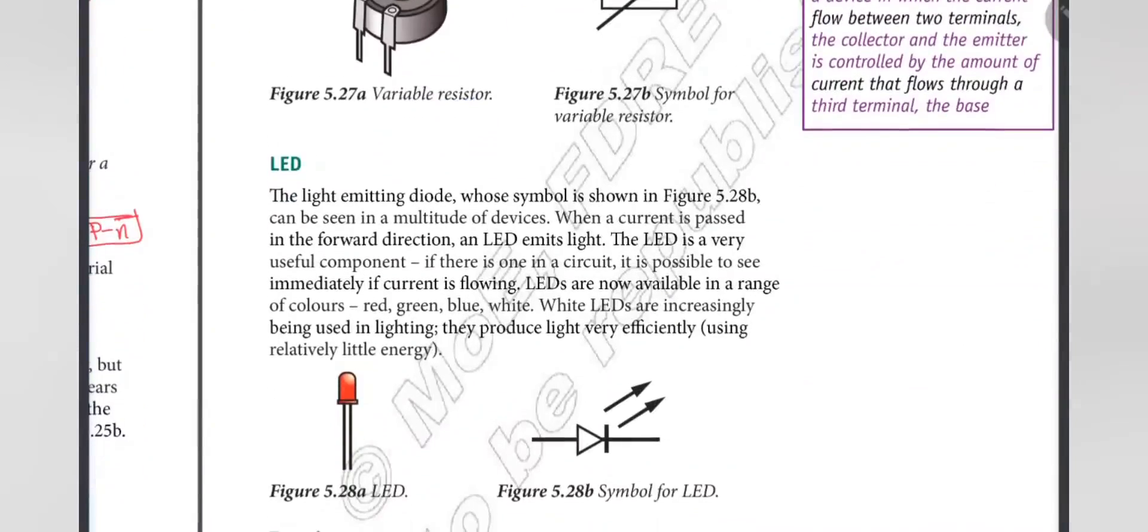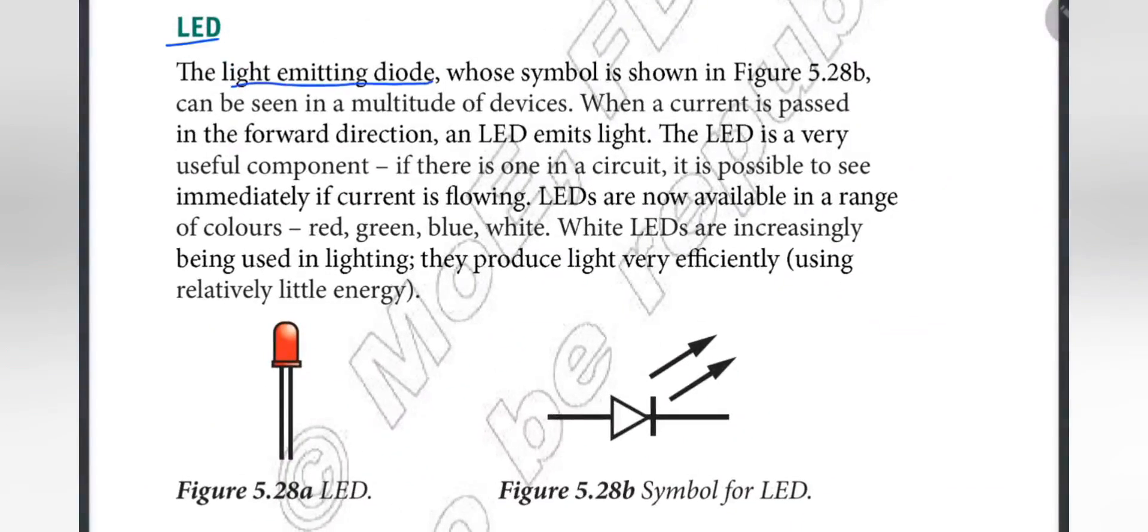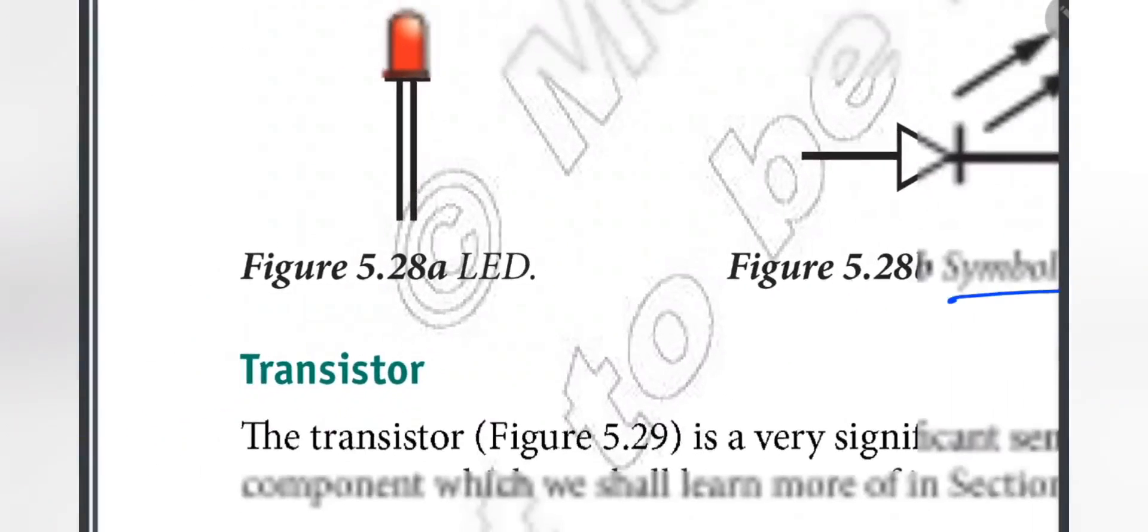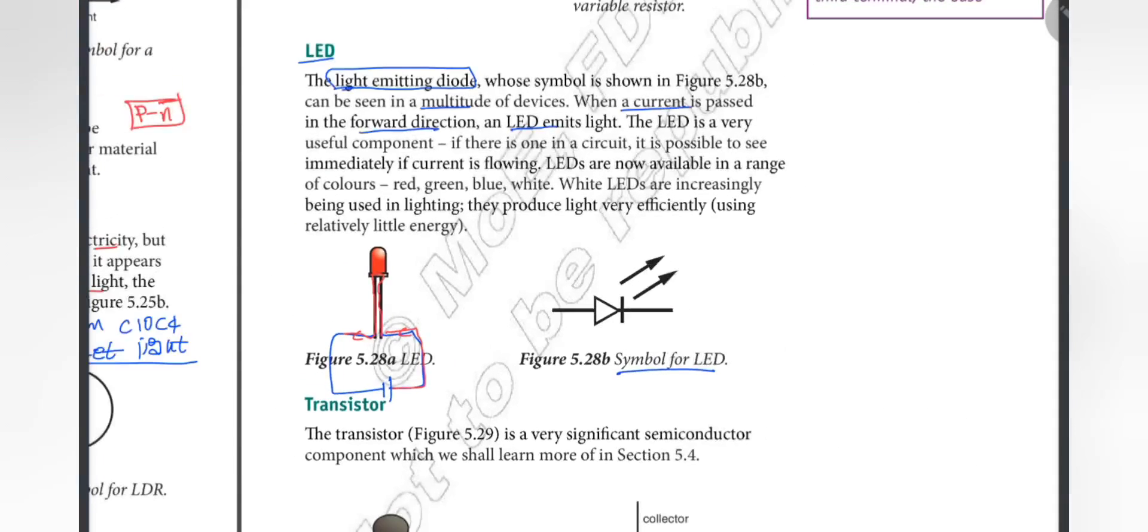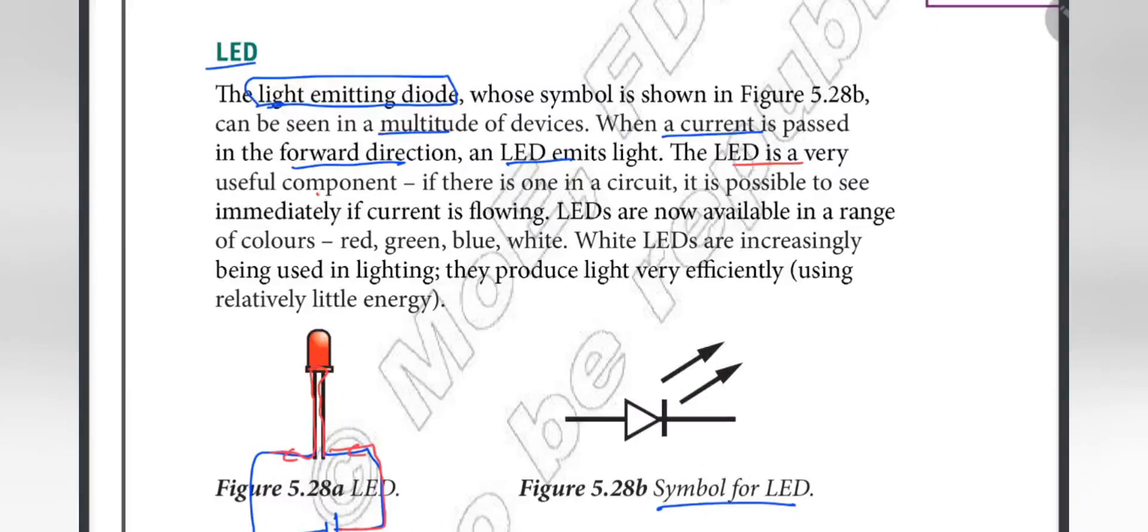LED, the light emitting diode. The symbol is shown. The light emitting diode can be seen in a multitude of devices. When a current is passed in the forward direction, an LED emits light. Current flows in the forward direction.